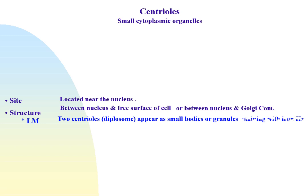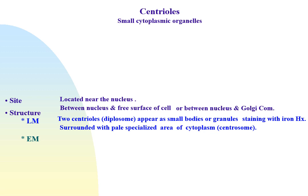Centrioles usually appear as small bodies or granules after staining with iron hematoxylin. Centrioles are surrounded by a specialized area of cytoplasm called the centrosome. By electron microscope, the centrioles appear as two cylinders perpendicular to each other.